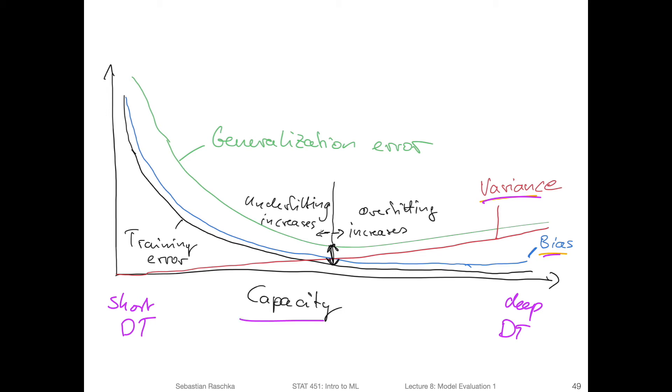So if the capacity increases, the variance will increase, right. So that is what we've seen for deep decision trees also when we did the bias-variance decomposition and compared it, for example, to a bagging classifier or a bagging model, where we averaged. Averaging will reduce the variance, but here we are only talking about a single model. And you will see that the higher the capacity of the model, the more complex the model, the higher the variance.